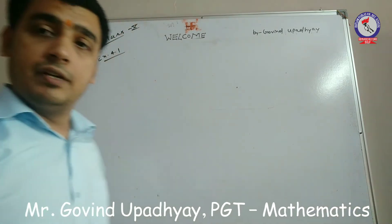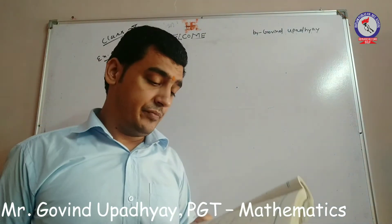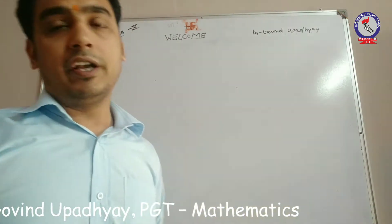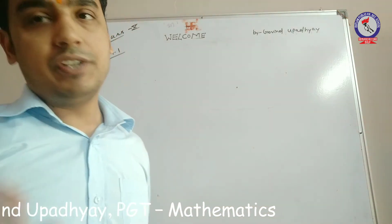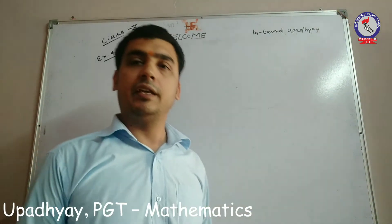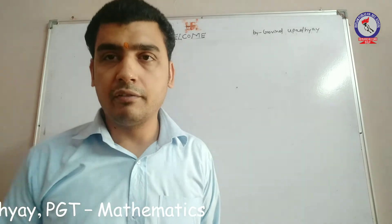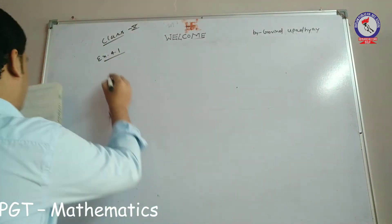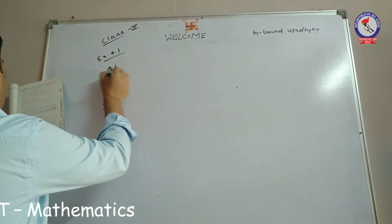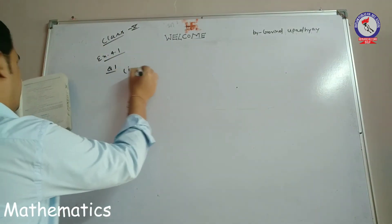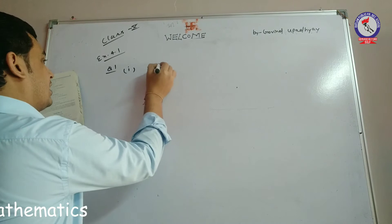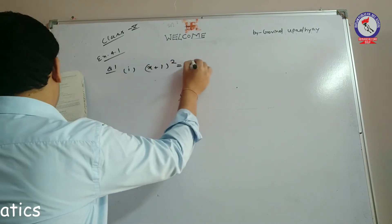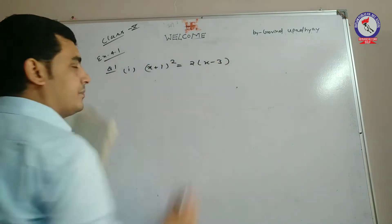Question 1 is: check whether the following are quadratic equations. हमें केवल चेक करके बताना है कि यह जो equations हैं, यह quadratic equation हैं या नहीं। Question number 1, first part: (x + 1) whole square is equal to 2x minus 3.